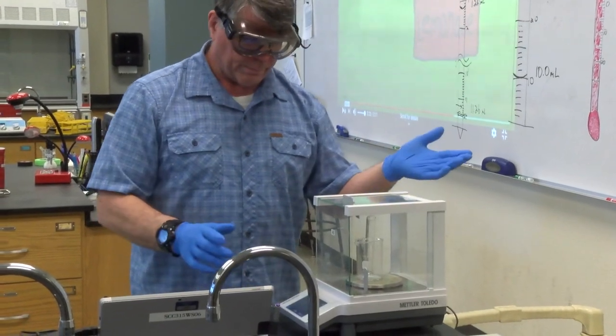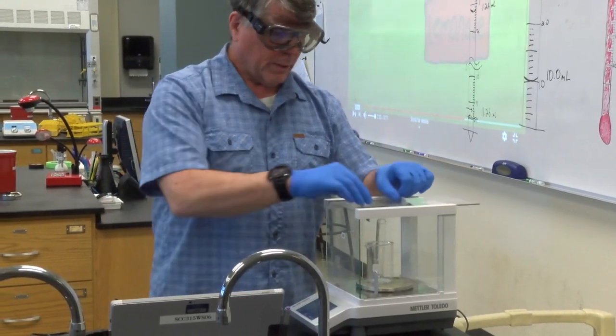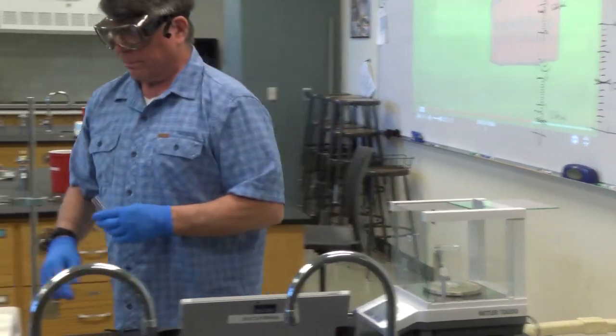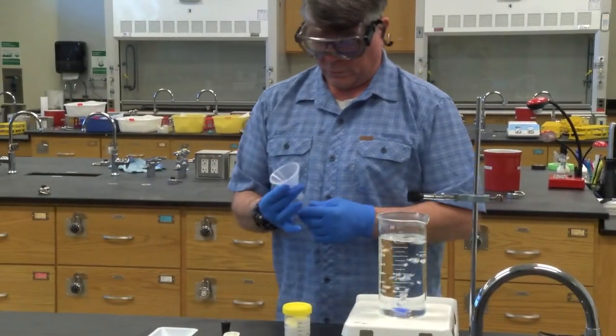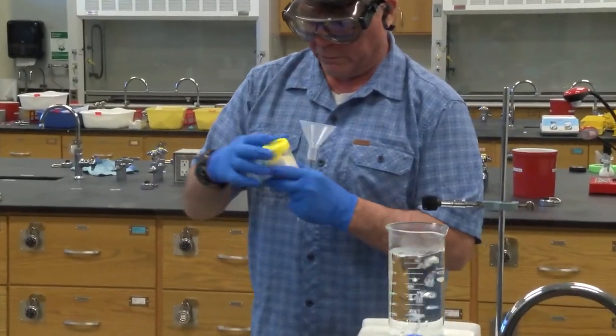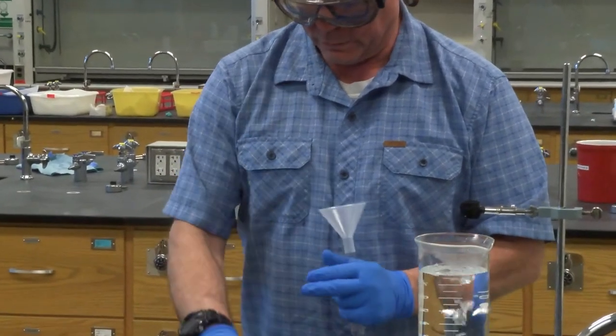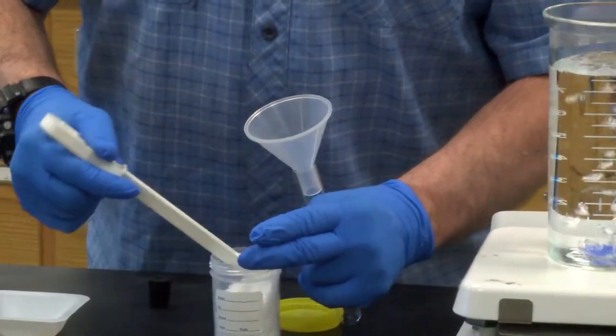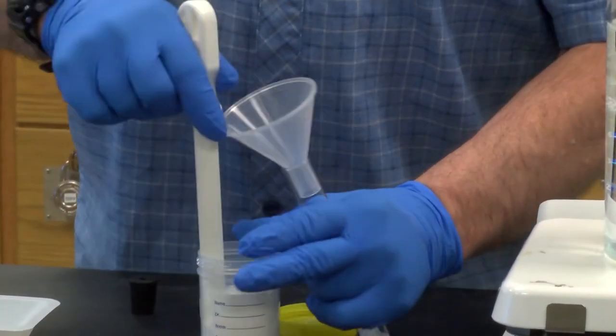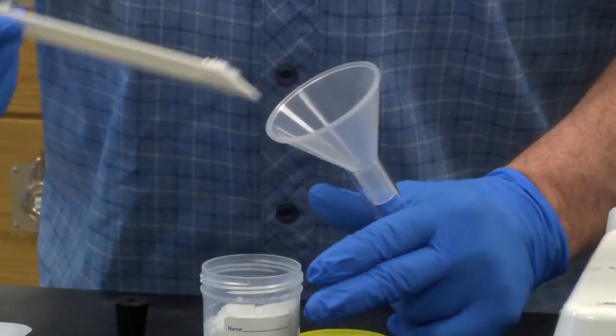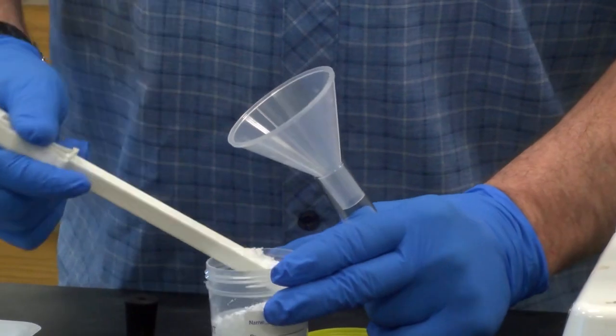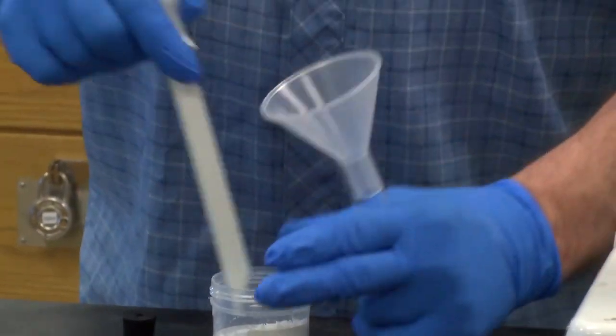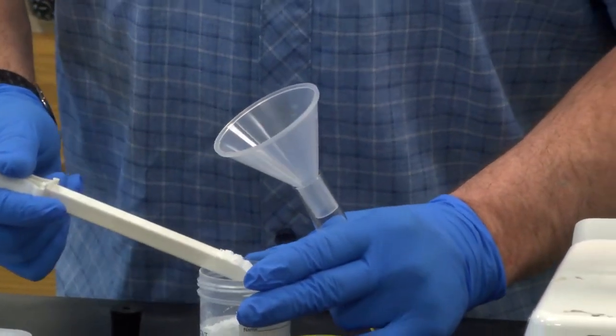So tare it out, it says zero, take the test tube out, powder funnel, solid organic solvent, spatula. This part gets messy, but we're just going to fill it right on up to about where that rubber stopper was. And however much that is, that's how much it weighs.